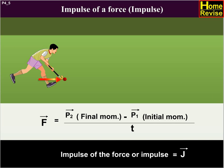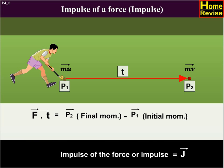Impulse of the force, or impulse, vector F dot t equals vector P2 minus vector P1, which equals vector J, which equals m vector v minus m vector u.